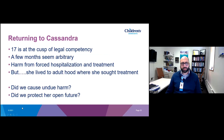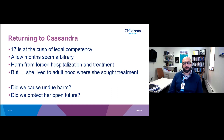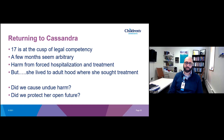Let's return to Cassandra. At 17, she's at the cusp of legal competency — she was six months shy of 18 when she was forced to undergo treatment and stay at the hospital. A few months seems somewhat arbitrary. There is harm from forced hospitalization and treatment. We don't know how willingly she went along with it or what we needed to do to ensure she underwent that treatment. On the other hand, she lived to adulthood where she sought treatment. So reasonable questions here are: did we cause undue harm to Cassandra, and did we protect her open future?